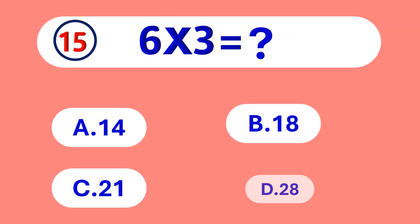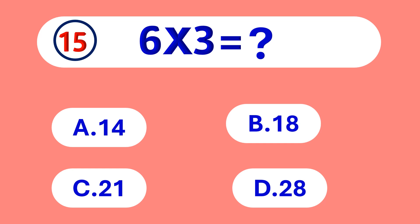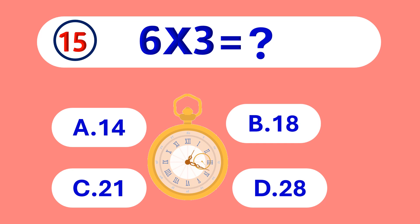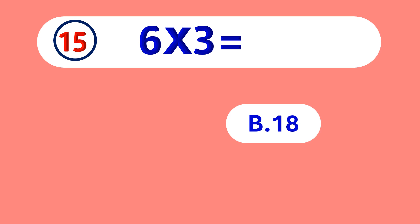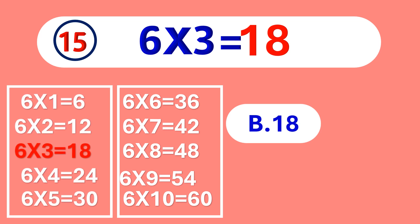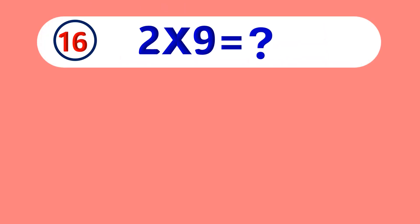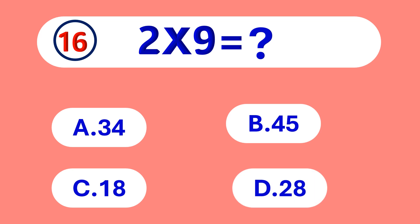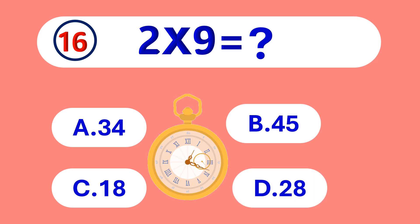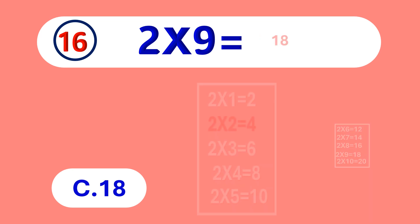6 times 3 is equal to... 18. 6 times 3 is 18. 2 times 9 is equal to... 18.